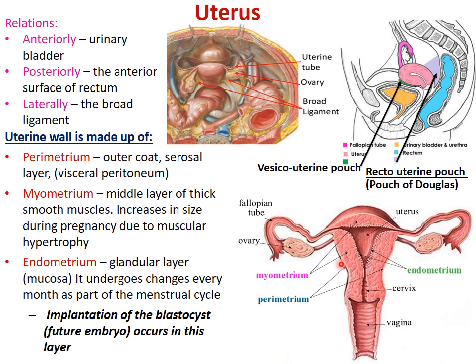In the menstrual cycle, out of the three layers of endometrium, the superficial compact layer and the spongy layer are regularly shed and replaced each month. The basal innermost layer keeps alive and does not shed. Implantation of the blastocyst — the future embryo — occurs in the endometrium. So of the three uterine wall layers, the endometrium is the one that gives implantation.